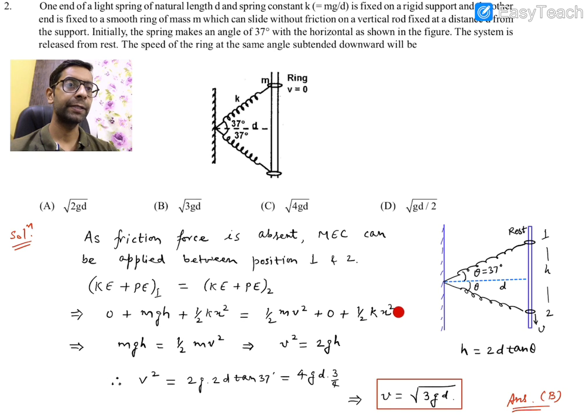So ultimately, it leads to half mv-square. And we can also say that when it goes down, the gravitational potential energy decreases into kinetic energy. So we could write this equation directly. I started it by writing these things.